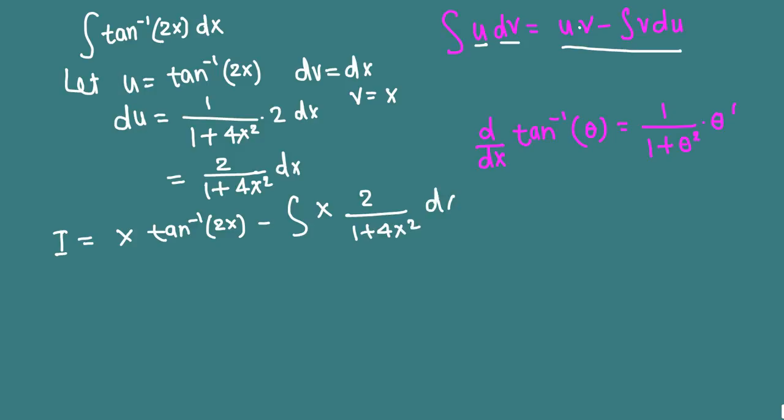Du is 2 over 1 plus 4x squared dx. We need to work on this integral. This part is done, x tangent inverse 2x, minus on the top we have 2x. In fact we can pull 2 all the way outside. The bottom is 1 plus 4x squared.